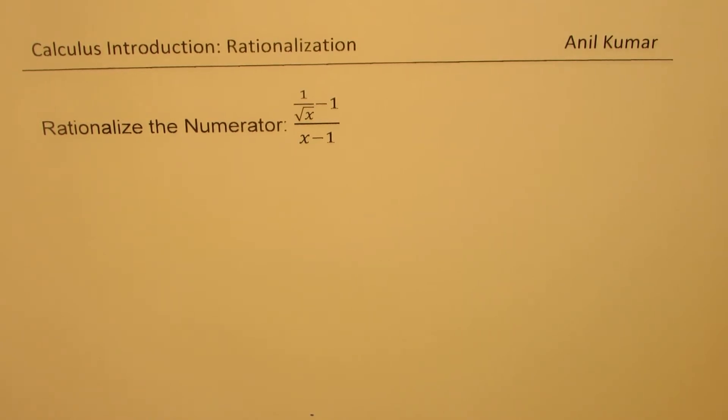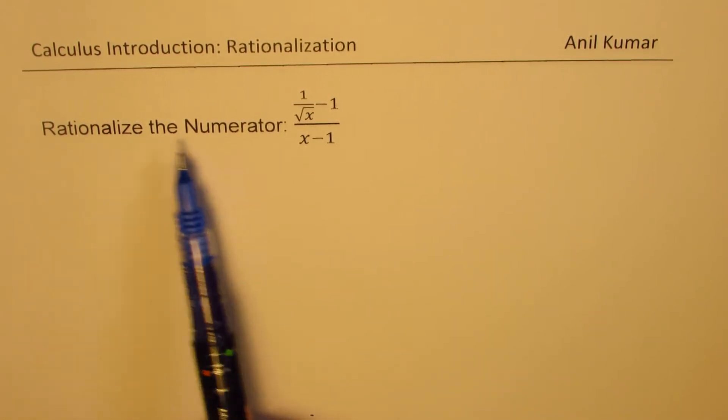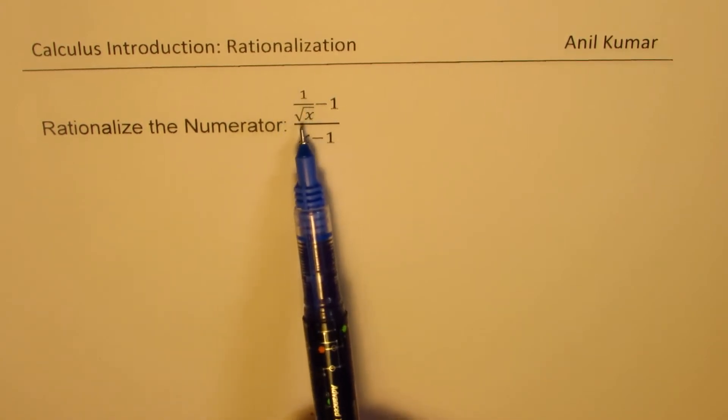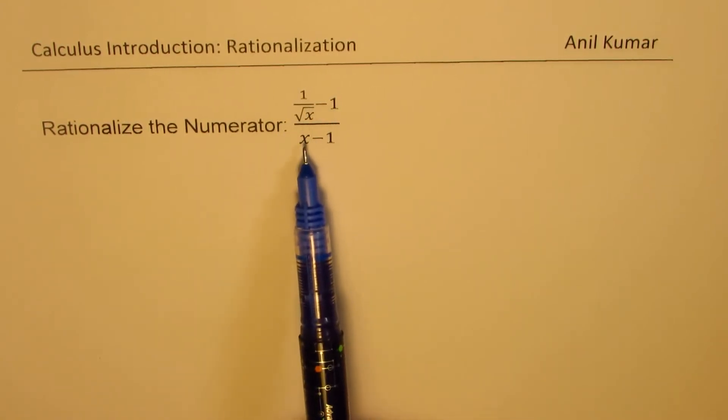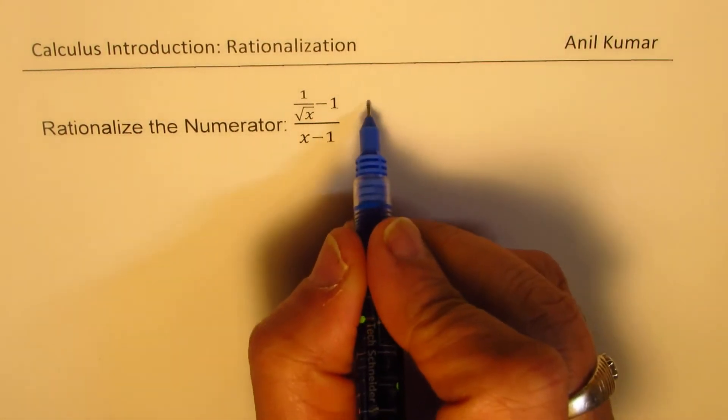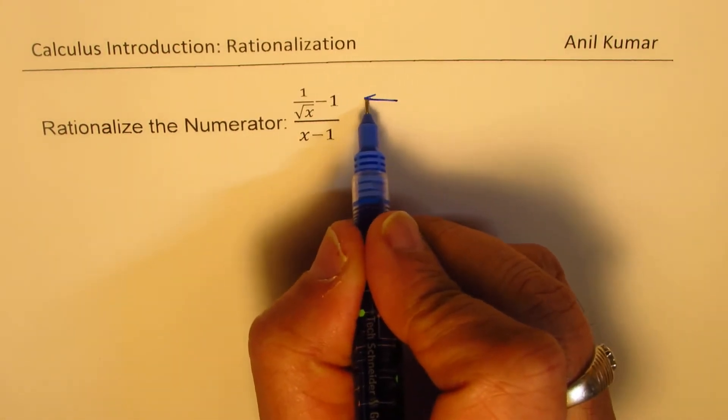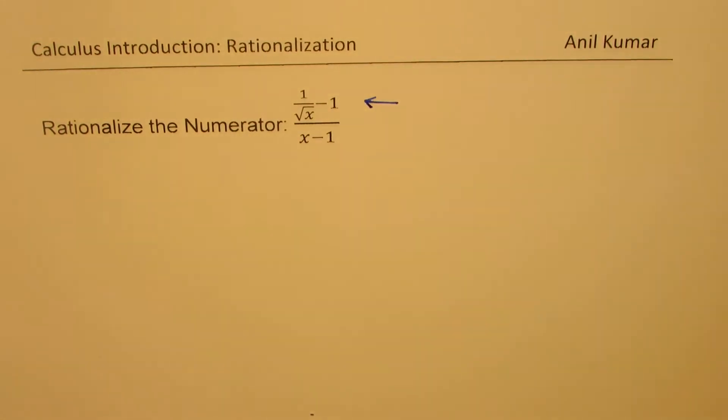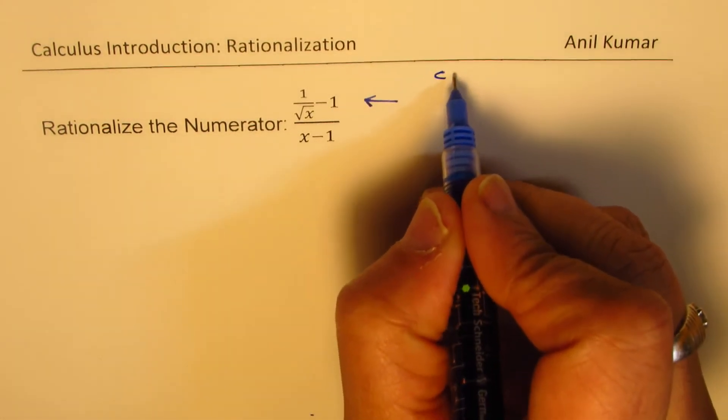Let's try to understand the correct way of rationalizing the functions. The question here is rationalize the numerator: 1 over square root x minus 1, over x minus 1. This part here is the numerator.